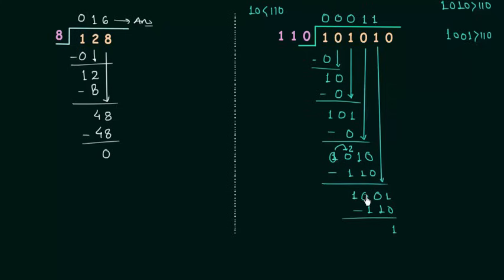1 minus 1 we have to take the borrow. We have 2 here and when I give borrow to this position I will have 1 and here I have 2. So 2 minus 1 is 1, 1 minus 1 is 0 and here I have 0 after giving borrow, so I have 0.